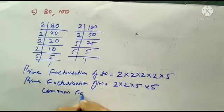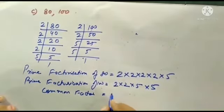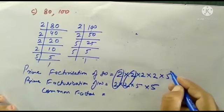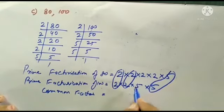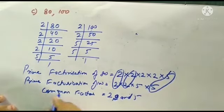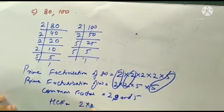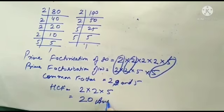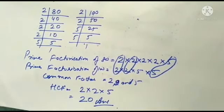So now we have common factors. Common factors are 2, 2, and 5. So our HCF is 2 multiplied by 2 multiplied by 5. 2 times 2 is 4, 4 times 5 is 20. So 20 is our answer.